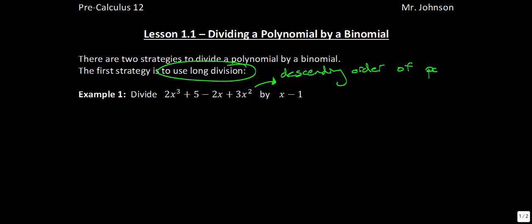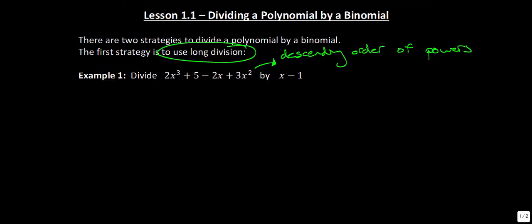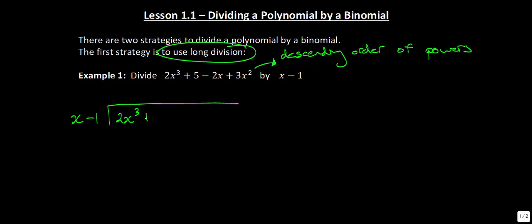So that's going to be our first task here today. What we're going to do is take our binomial, x minus 1, and divide it into our polynomial. But we're going to rearrange it a little bit. Let's write it in descending order of powers: 2x cubed plus 3x squared minus 2x plus 5.